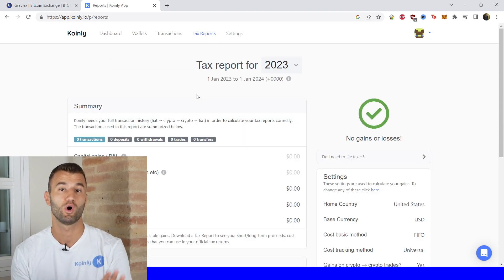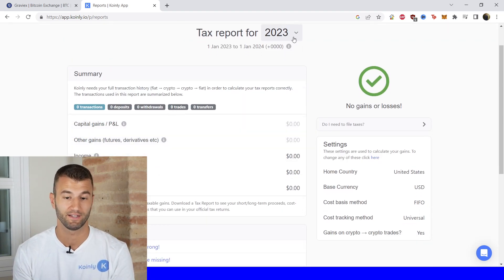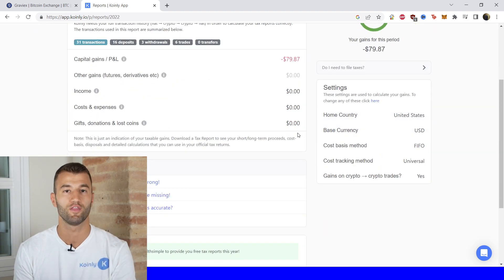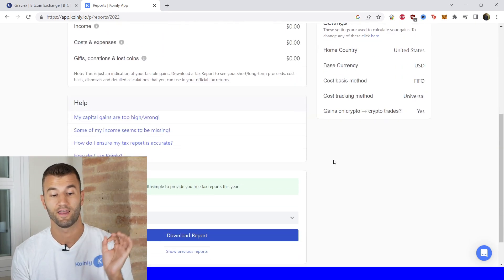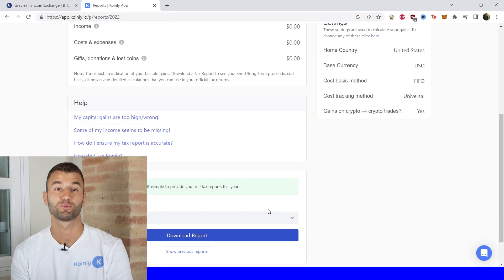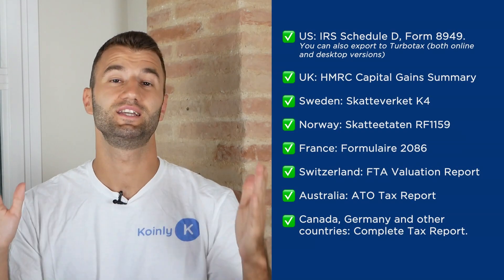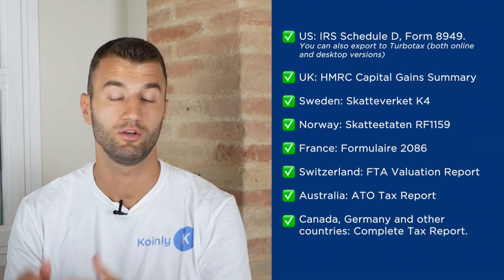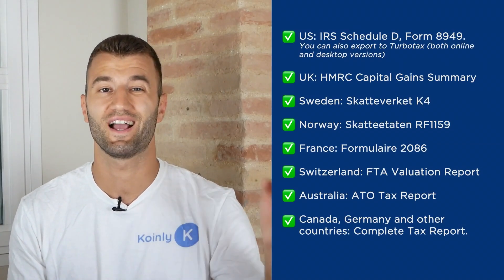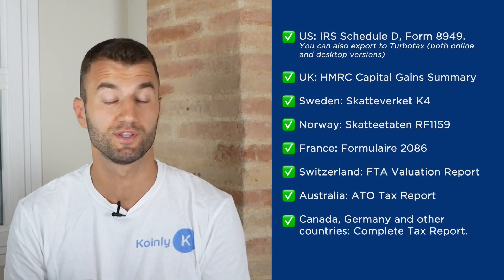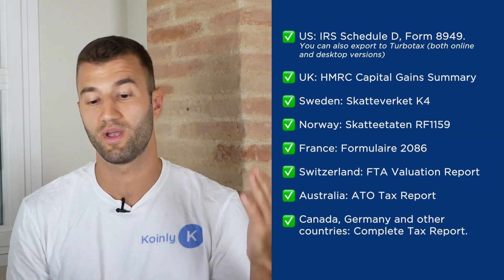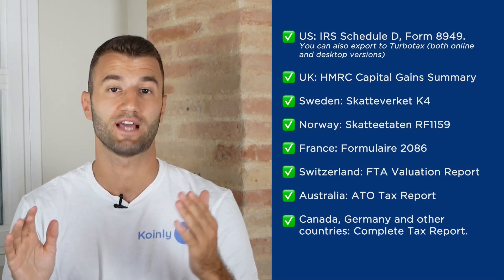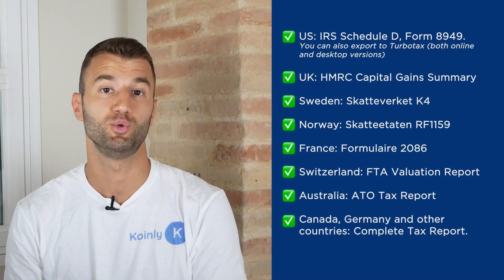Once you're happy with everything, go into the tax reports area for a final summary of your crypto activity throughout the year. You can look at your capital gains, losses, costs and expenses. At the very bottom, select a tax report appropriate for your needs. For the IRS we have Schedule D and Form 8949, you can export to TurboTax in both online and desktop versions, and we have reports for UK, Sweden, Norway, France, Switzerland, Australia, Canada, Germany, and other countries with a complete tax report.